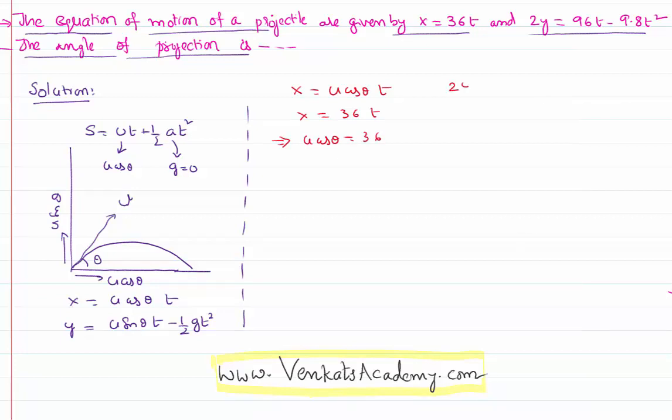Similarly, 2y is given as 96 into t minus 9.8 t square. I want an equation for y. Divide with the 2. 96 by 2 is nothing but equal to 48 minus 4.9 t square.